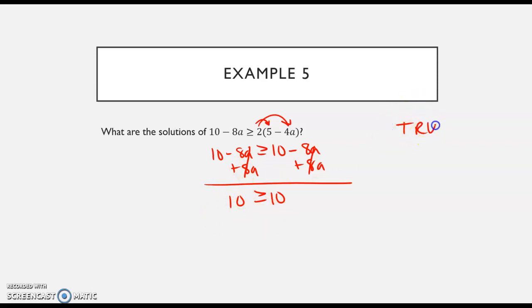And so if you have a true statement, then our answer is all real numbers. A can be any real number and it's going to work. So my answer is all real numbers. And again, that's because if my variable drops out and this statement is true, which it is, our answer is all real numbers.